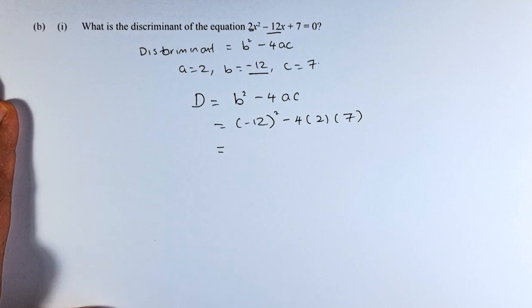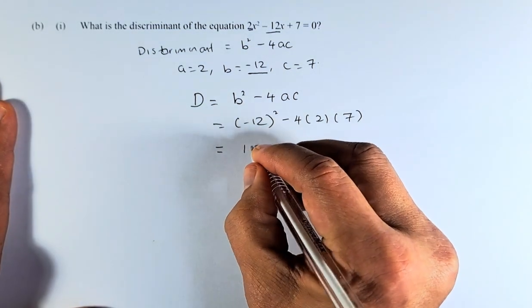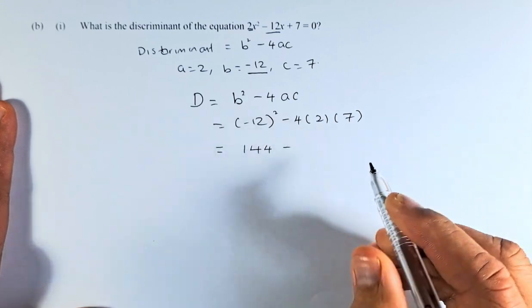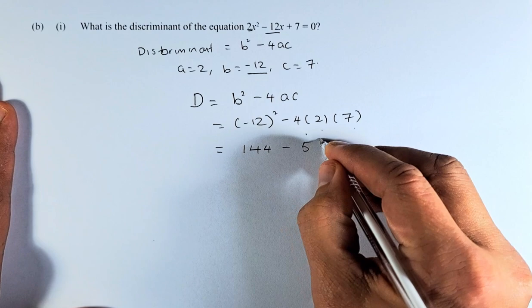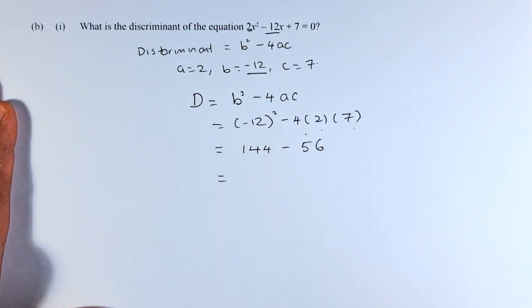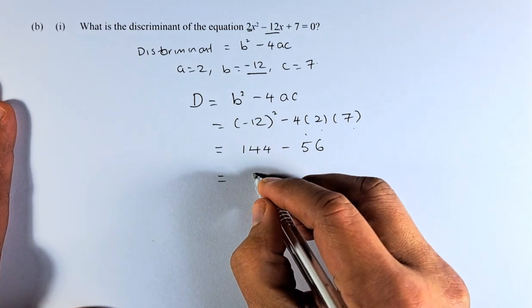So now what we are going to do, we are going to solve this. So (-12)² is the same as 144. Next we get 4 × 2 × 7, or 8 × 7 is 56. And you put in a calculator 144 - 56, and that will give you a total of 88.